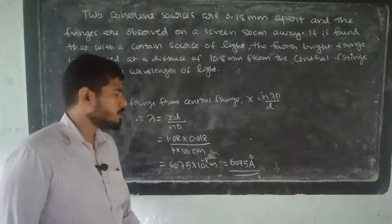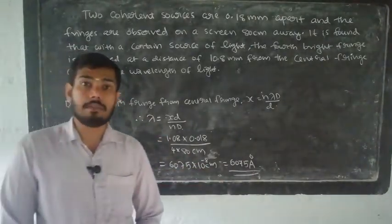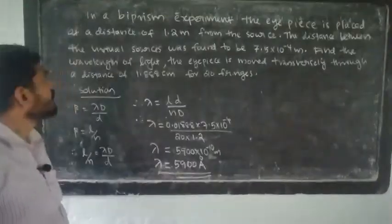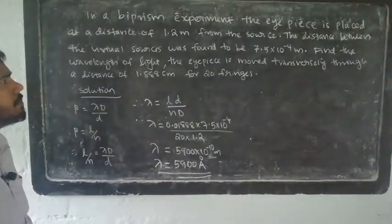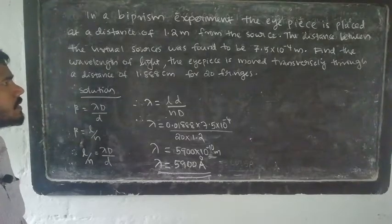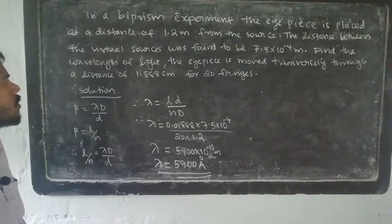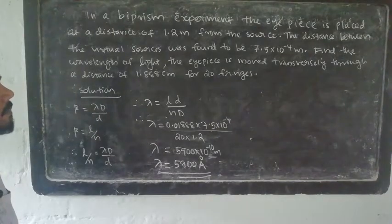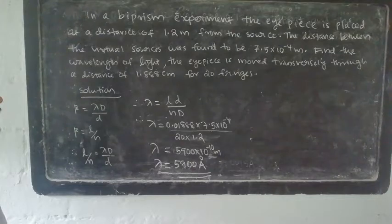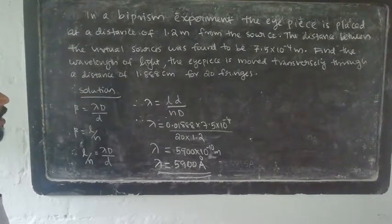The answer is: wavelength of the light is 6075 Angstroms. Another question: In a bi-prism experiment, the eyepiece is placed at a distance of 1.2 m from the source. The distance between the virtual sources was found to be 7.5 into 10 raised to minus 4 m. To find the wavelength of light, the eyepiece is moved transversely through a distance of 1.888 cm for 20 fringes.